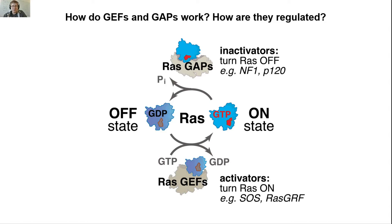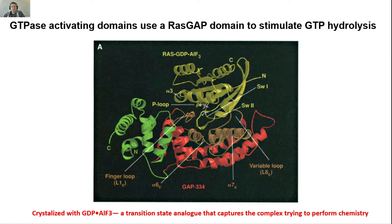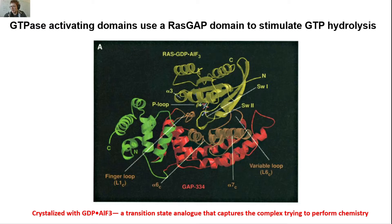Now we've talked about GEFs, so how about GAP proteins? How does a molecule accelerate the turnoff of RAS? The way that GTPase activating proteins work is they have a domain called a RAS GAP domain that functions to stimulate GTP hydrolysis. Here you're looking at a crystal structure of RAS interacting with a RAS GAP. They used a clever trick to trap the RAS GTPase in a state where they could see the GAP interacting with it — a transition state analog, GTP-aluminum fluoride — so they could capture this complex in the act of trying to perform chemistry on the GTPase. This enabled them to figure out how this thing actually works.